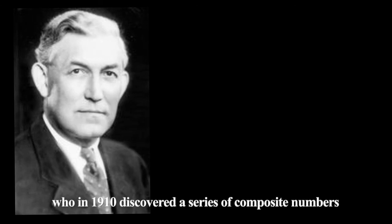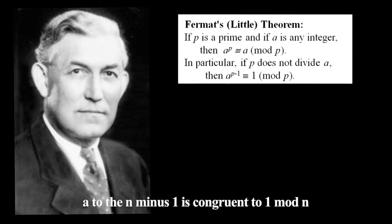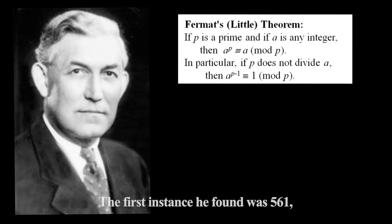Also known as absolute Fermat pseudoprimes, Carmichael numbers are named after American mathematician Robert Daniel Carmichael, who in 1910 discovered a series of composite numbers that passed Fermat's little theorem, a to the n minus 1 is congruent to 1 mod n for all a relatively prime to n, even though previously it was thought that only prime numbers n could satisfy this theorem. The first instance he found was 561, which is 3 times 11 times 17.